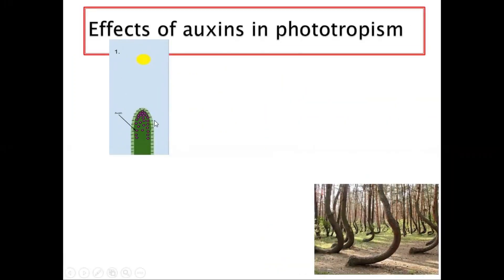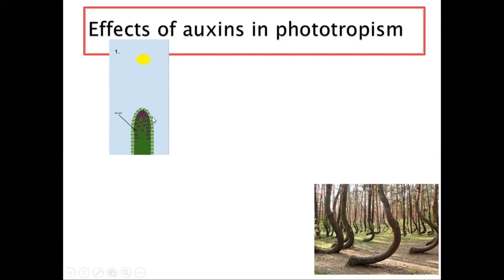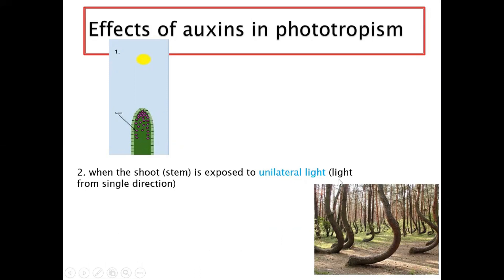Basically, if you have auxins, some of the properties are: found at the tip, they are diffusible substances, they can diffuse evenly downwards, and they are sensitive to light. But because light is falling on the whole shoot equally from all directions, the shoot is supposed to grow straight upwards. Now, when the shoot or stem is exposed to unilateral light — that's light from a single direction — what will happen?